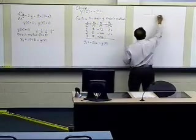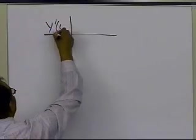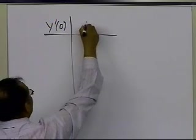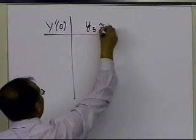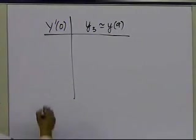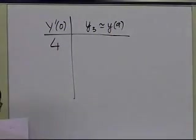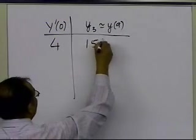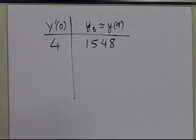So I'm going to write a table here. I had y prime of 0, for example, and what did I get for y3, which is approximately equal to the value of y9. So this is what I got when I chose y prime of 0 equal to 4, I got 1548, that's what I got as the value of y3.